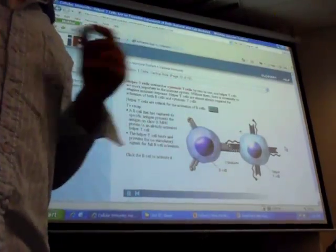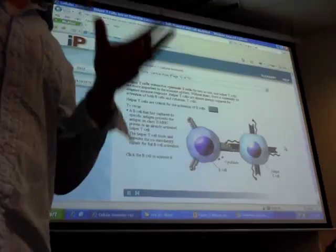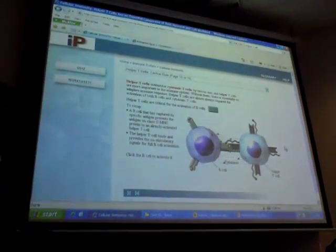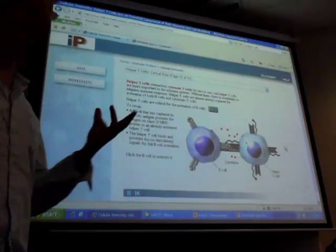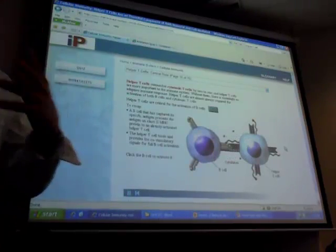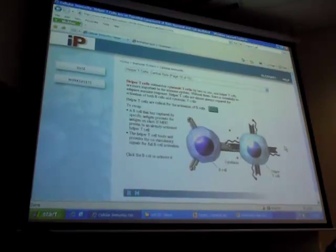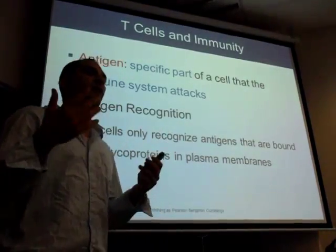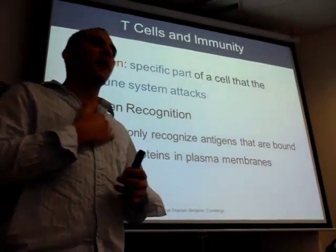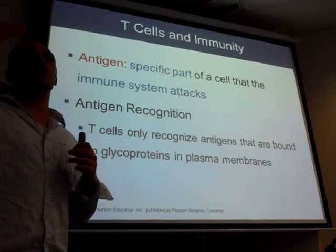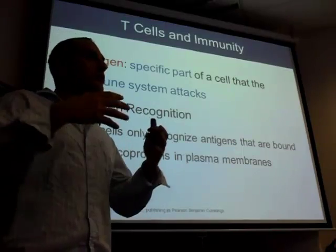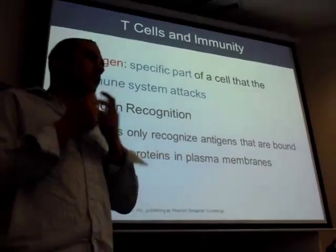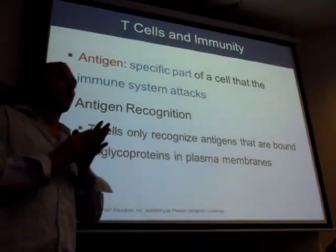Antigen-presenting cells do exactly what their name says — they present antigens. Macrophages eat pathogens, then take pieces and present them on their surface so T cells can recognize what to attack. Monocytes travel through blood, and wherever they end up they become a macrophage with a specific name: in the liver they're Kupffer cells, in the brain/spinal cord they're microglia, under the skin they're Langerhans cells.